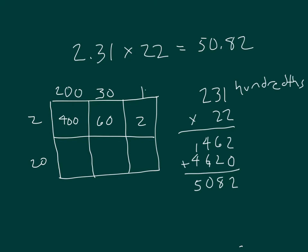20 times 200 is 4,000. 20 times 30 is 600. And 20 times 1 is 20. Adding those together, I would get 4,620. So that's my area model for that same problem.